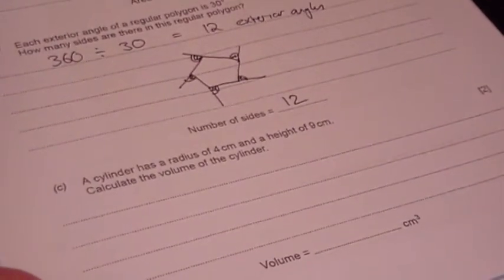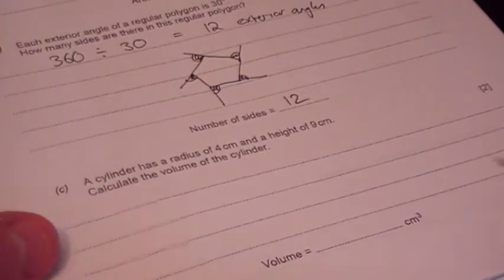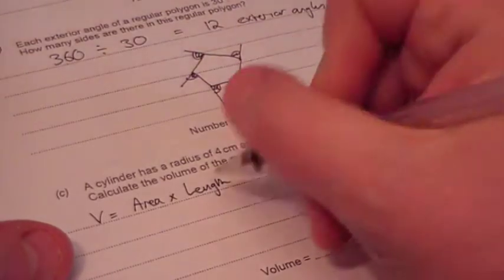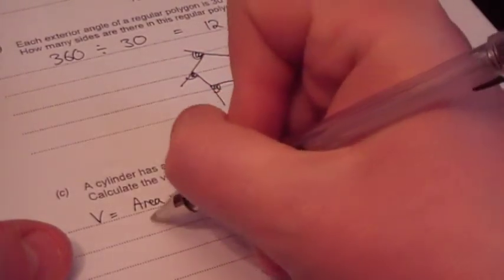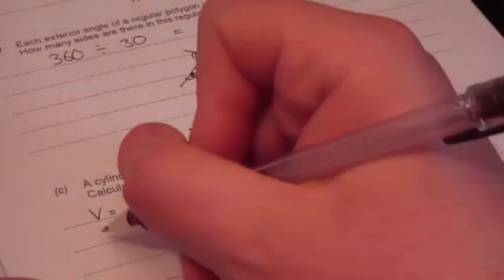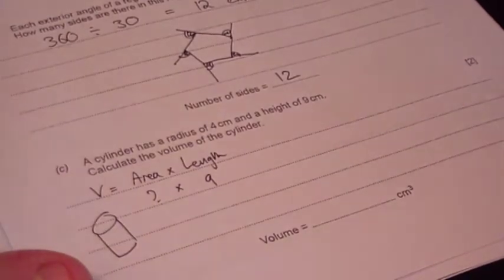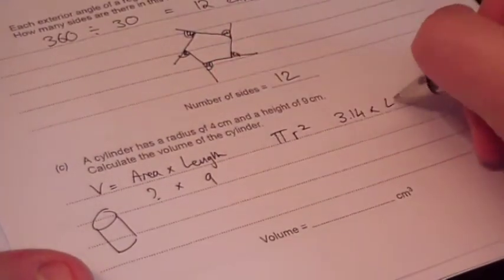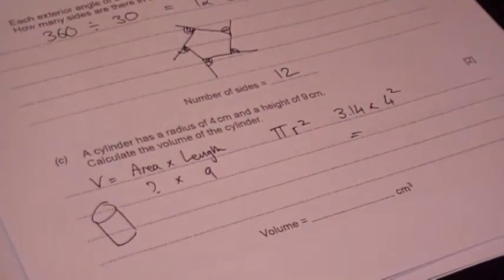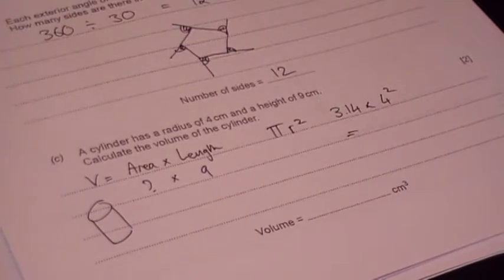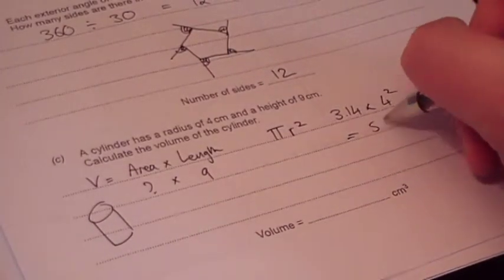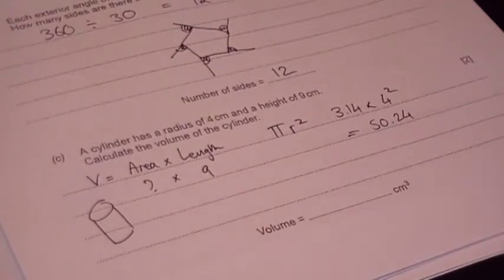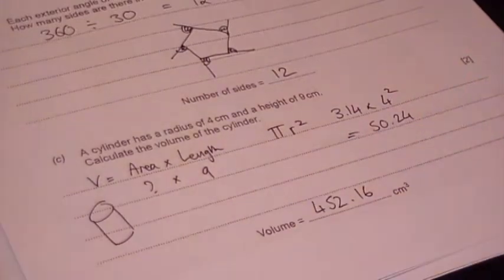A cylinder has a radius of 4 cm and height of 9 cm — calculate the volume. Volume of a prism is area × length. The circular face has area = π r² = 3.14 × 4² = 3.14 × 16 = 50.24. Then 50.24 × 9 = 452.16 centimetres cubed.